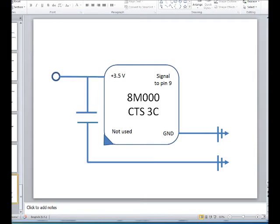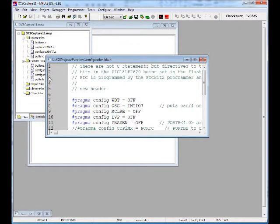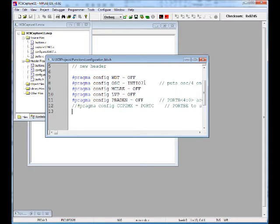Let's go to sample project configuration bits. This is the line of code that we need to change to EC for external crystal. It would be a very good idea to have actually two configuration bits files—one regular and one for an external crystal.